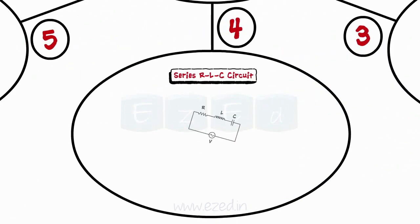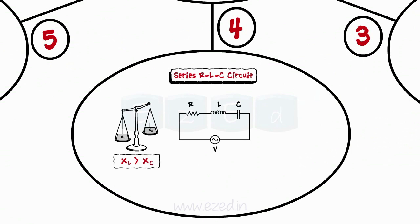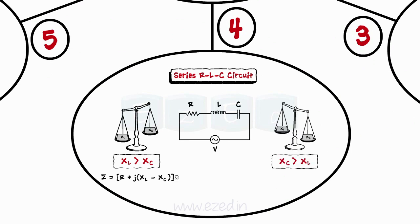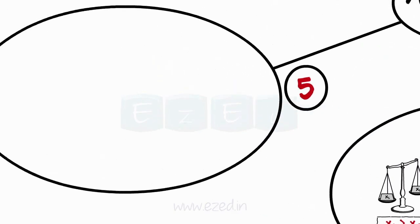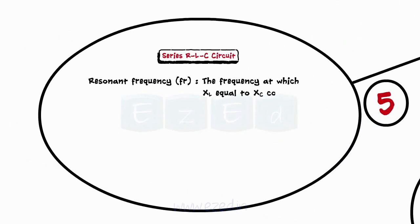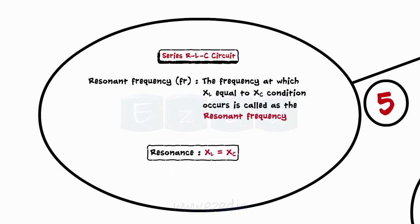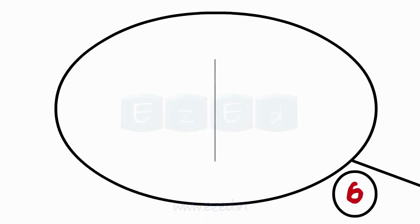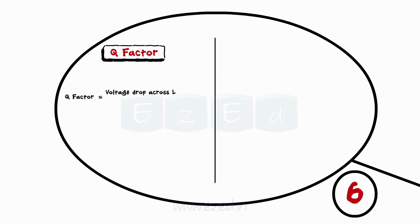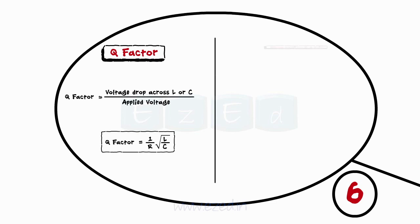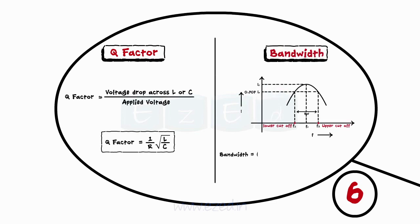In the series RLC circuit, if XL is greater than XC, the circuit behaves as an inductive circuit and Z equals R plus j·(XL minus XC). If XC is greater than XL, the circuit exhibits capacitive nature and Z equals R minus j·(XC minus XL). The frequency at which XL equals XC is called the resonance frequency, and this phenomenon is called resonance. The Q factor is the ratio of the voltage drop across the inductor or capacitor to the applied voltage, and the bandwidth is the difference between the upper and lower cutoff frequencies.